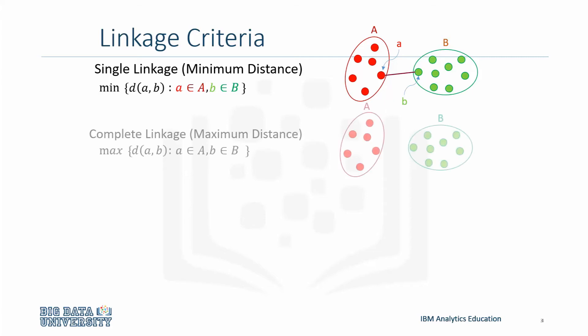Next up is complete linkage clustering. Once again we have point A and point B. This time we're finding the longest distance between two points in each cluster. In other words, we're noting the maximum distance between those two points.